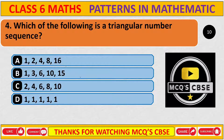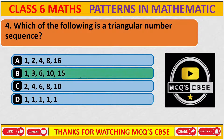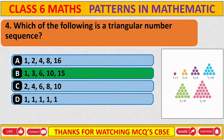Which of the following is a triangular number sequence? The correct answer is B: 1, 3, 6, 10, 15. As we just saw in question number 3, it is a triangular number sequence.